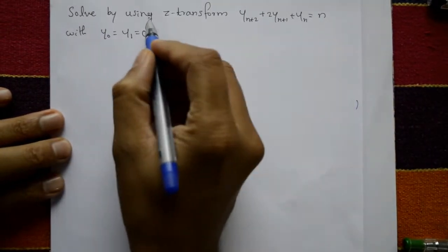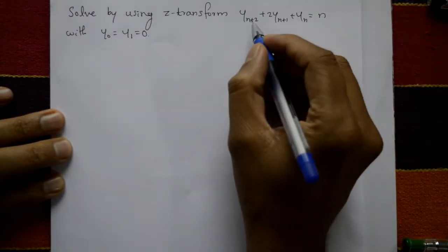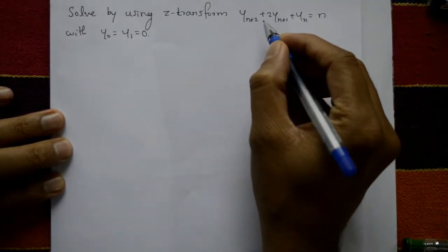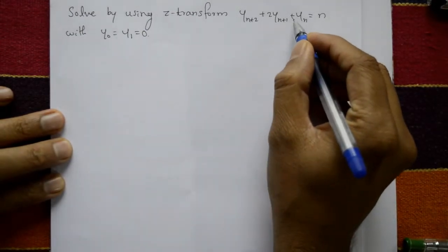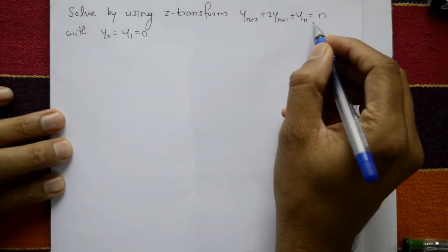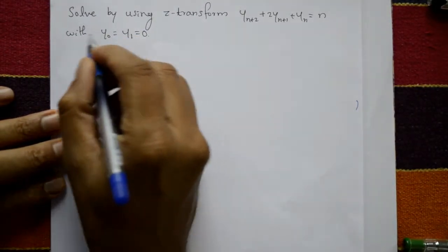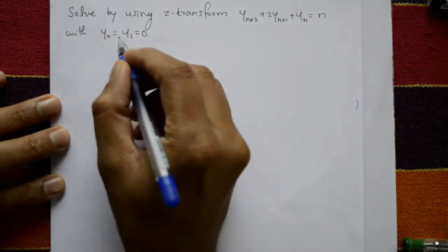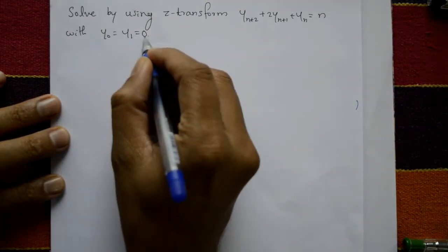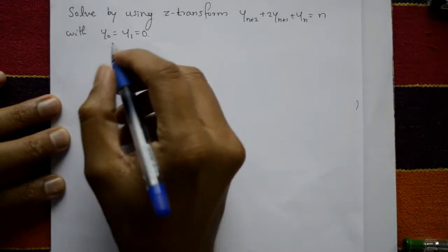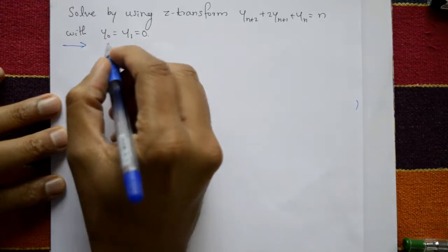Solve by using Z-transform: y(n+2) + 2y(n+1) + y(n) = n, with initial conditions y(0) = 0, y(1) = 0.